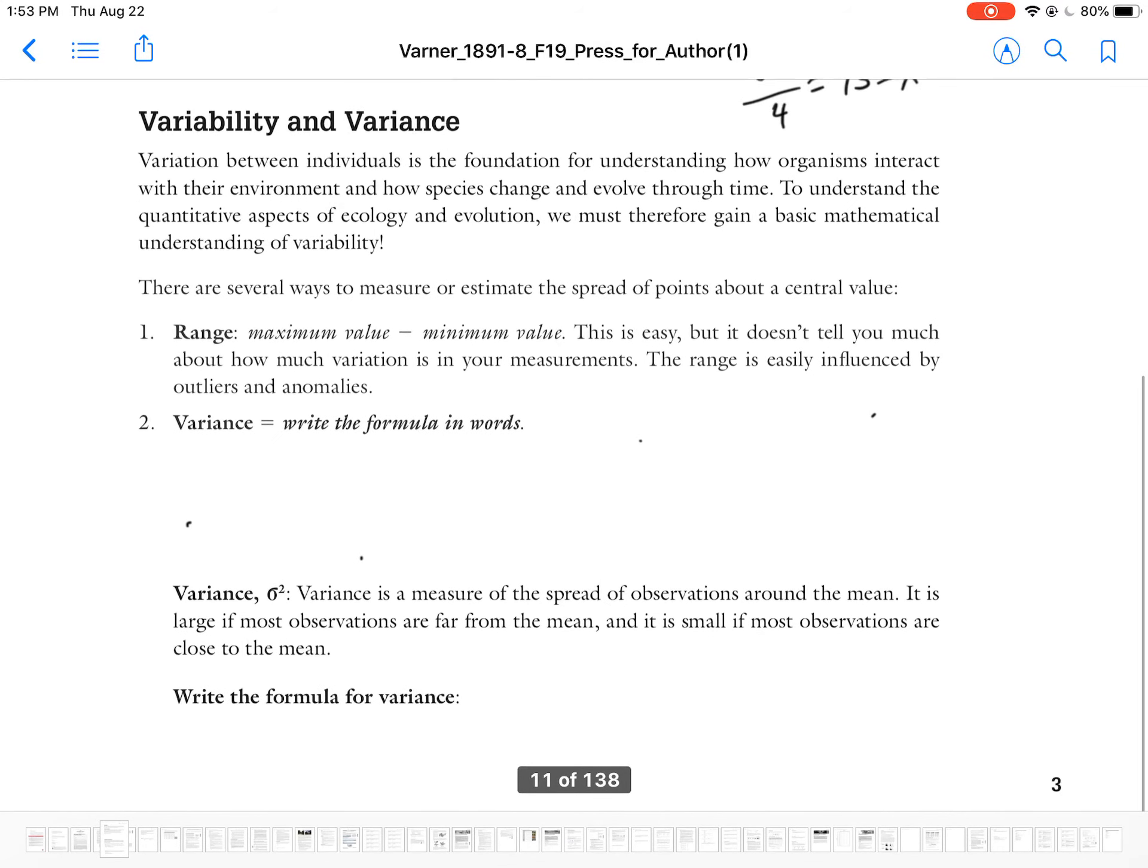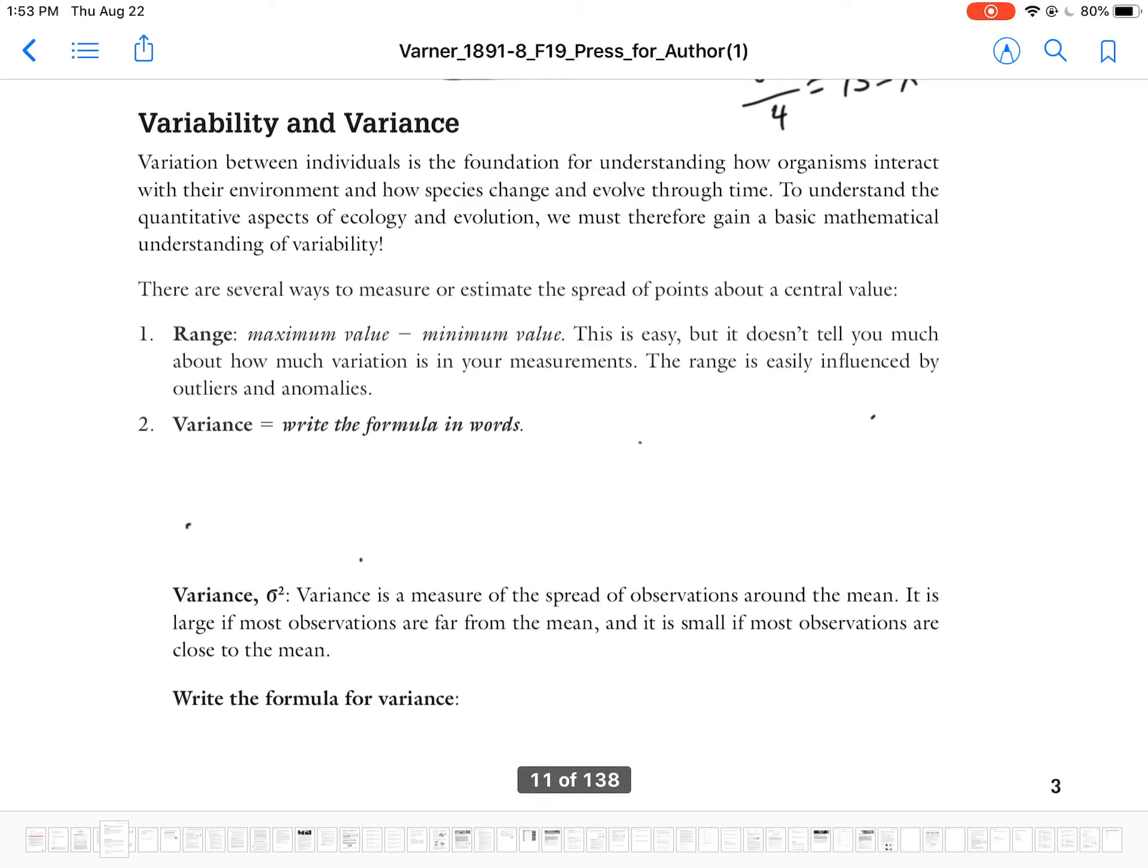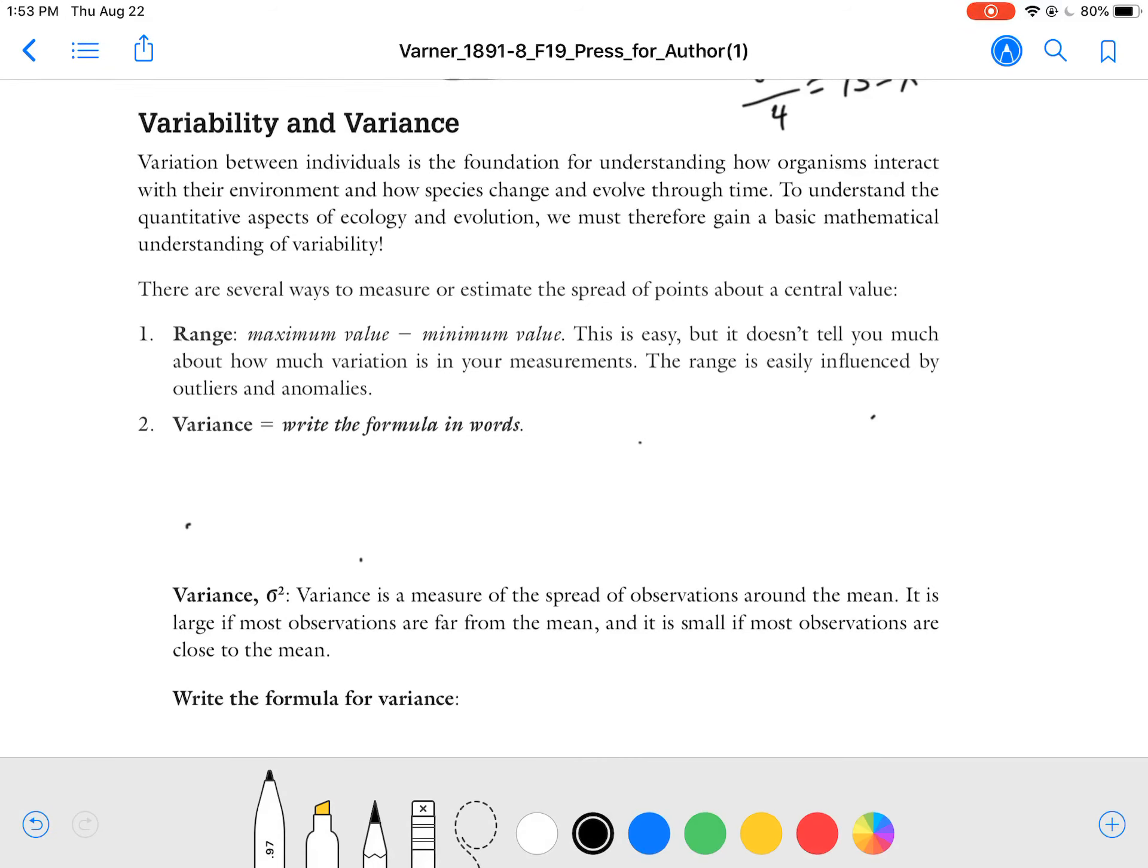Now we're also interested in this other value of how do the points vary around the mean? Like how are they spread out around the middle? And there's a couple of ways of doing that. One of those is called the range and the range is pretty self-explanatory. We subtract the maximum minus the minimum, and that is the range of the numbers. But it doesn't tell us a lot about the properties of the numbers in the middle. And the variance, as you'll see in a minute, can be written in words.